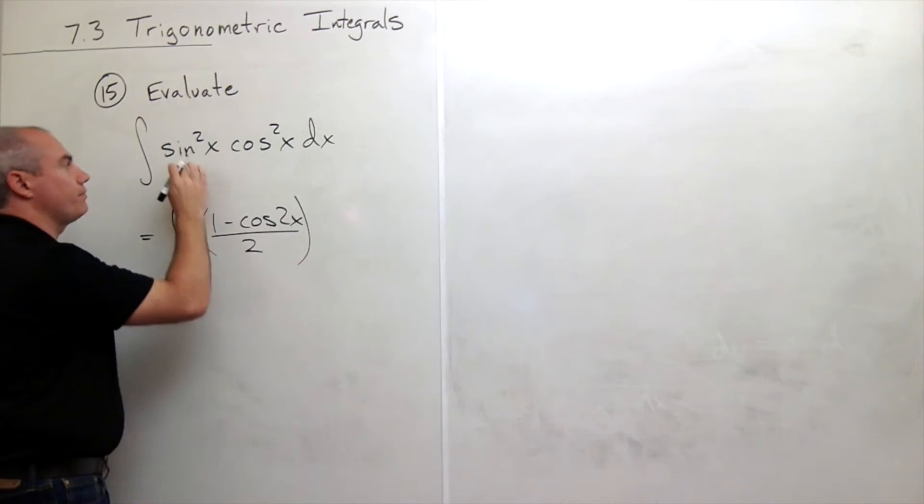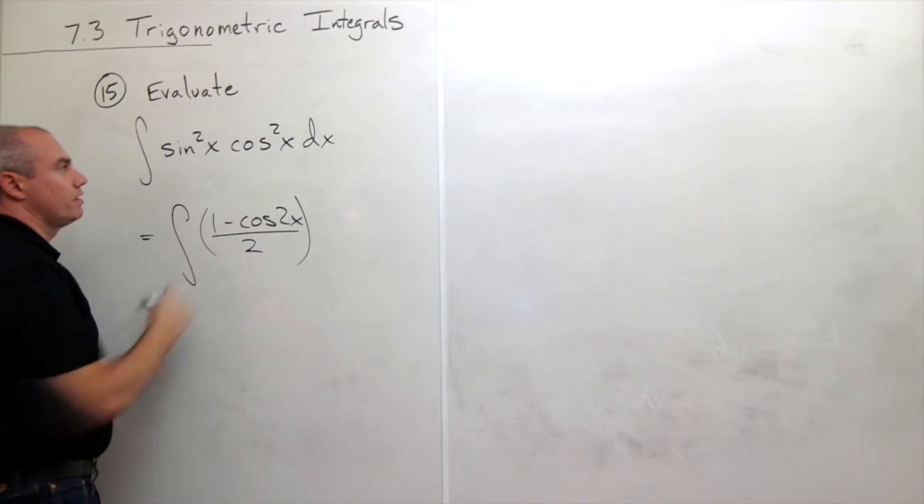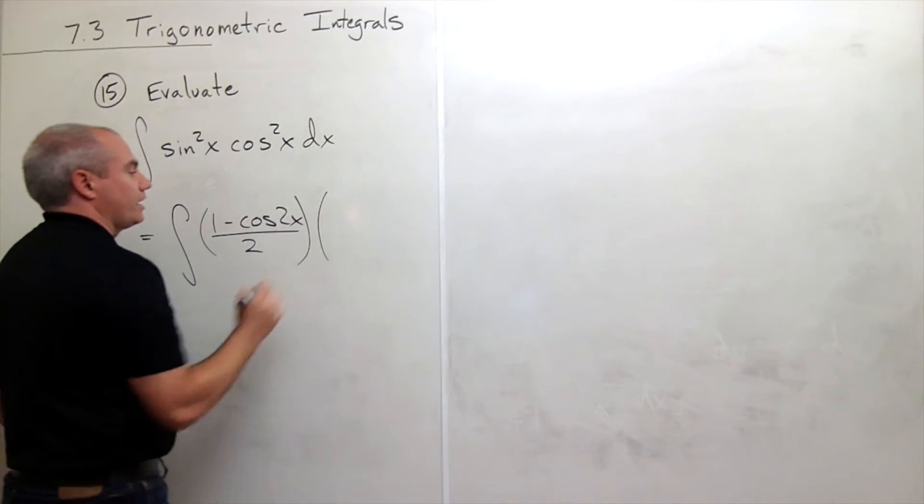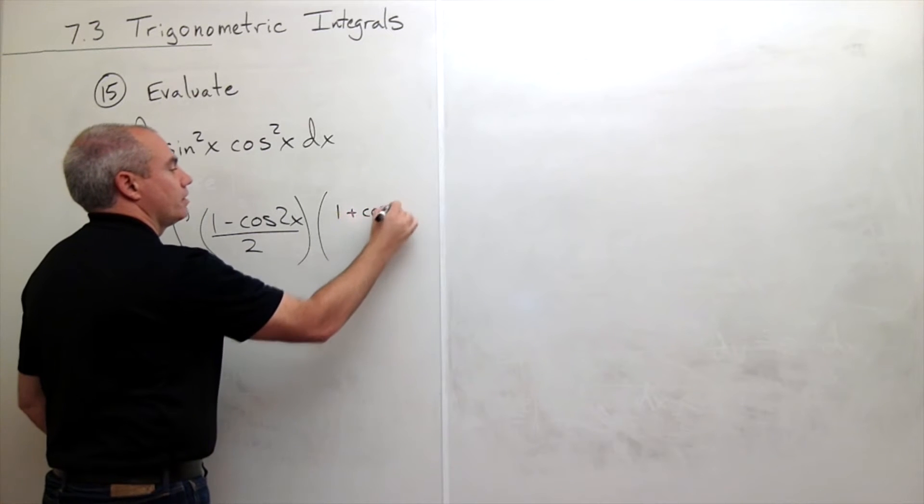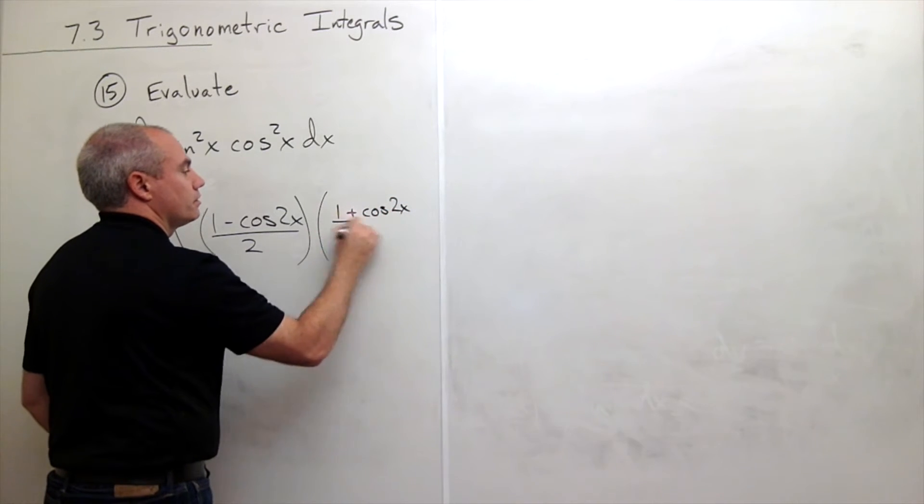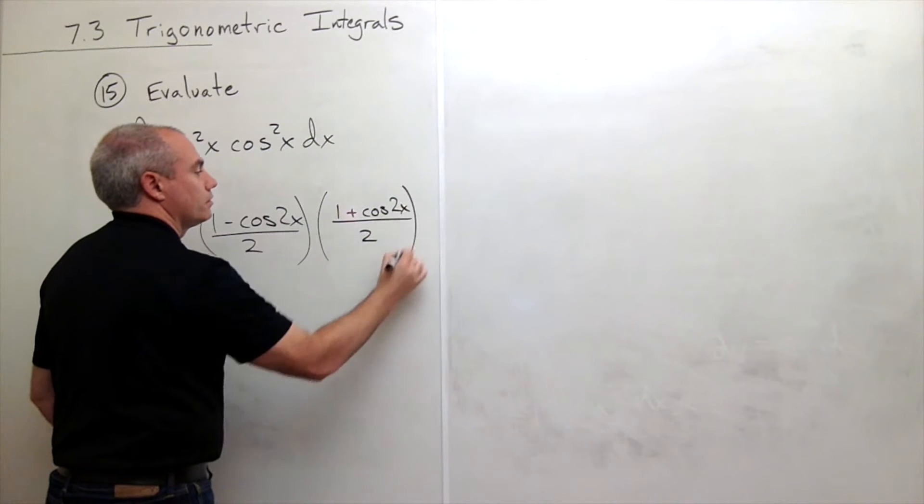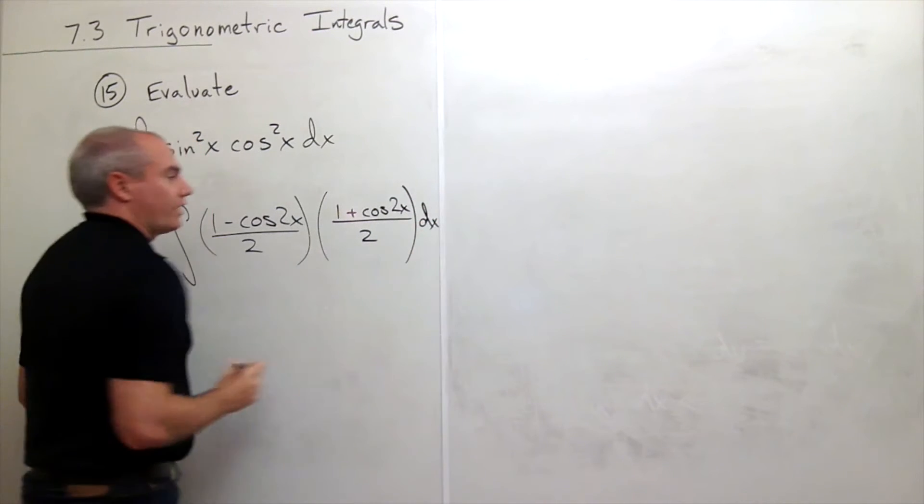Cosine squared of x also has a half angle identity form of 1 plus cosine of 2x over 2. All of that dx.